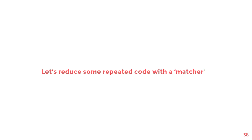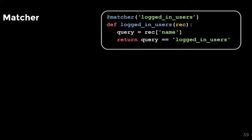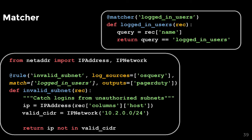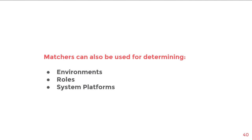In both of our examples, we had a bit of repeated code to look for the logged-in users query. We can use a thing called a matcher to extract out this common logic and apply it to all related rules. The first step is to pull out the redundant logic from both rules and declare a new matcher called 'logged_in_users'. When we write our rule, we leave that logic out and add a match of 'logged_in_users', and both are evaluated during processing. Matchers are really useful for identifying records of certain environments, roles, or platforms.